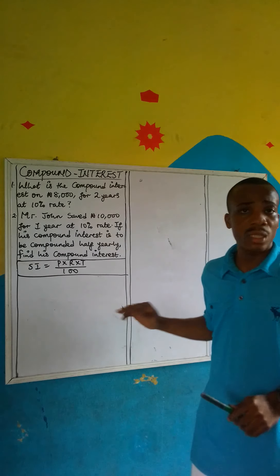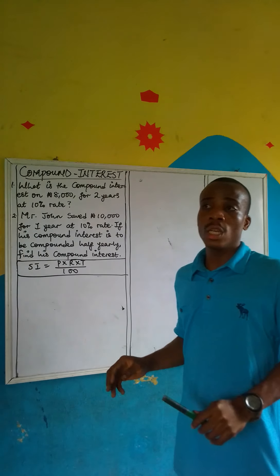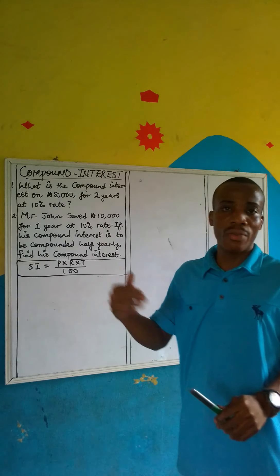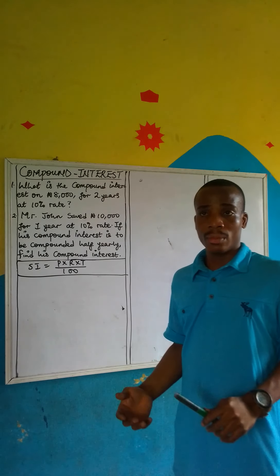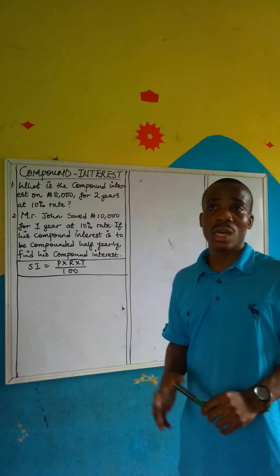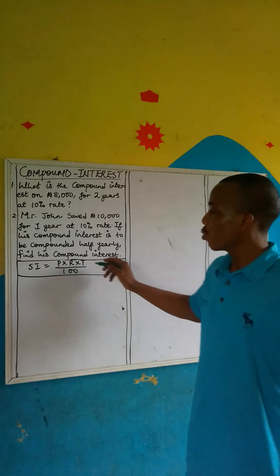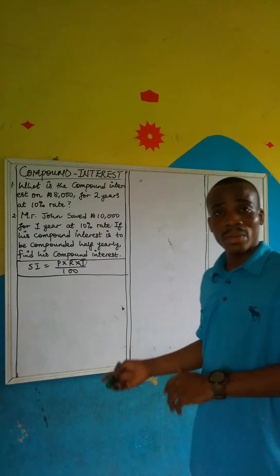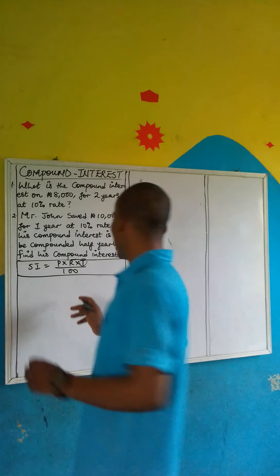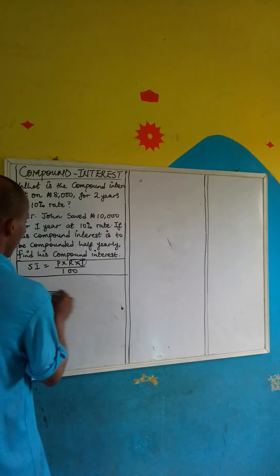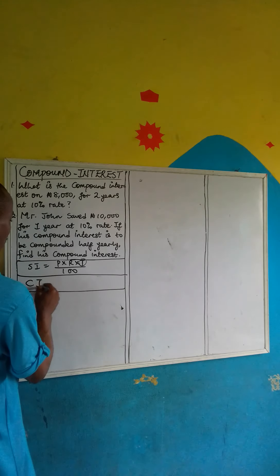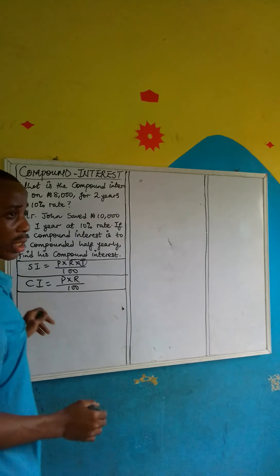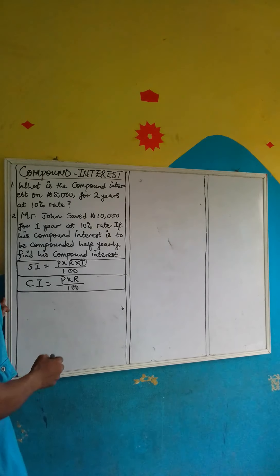Simple interest is different because in compound interest we need to calculate separately — let's assume we had two years — we calculate for the first year and the second year. Compounded together gives us our compound interest. So we won't be using T since we calculate each year separately. Therefore my compound interest formula will be: CI equals principal times rate divided by 100.